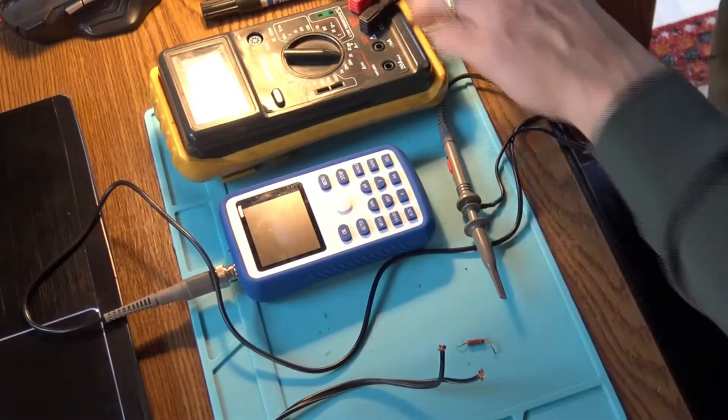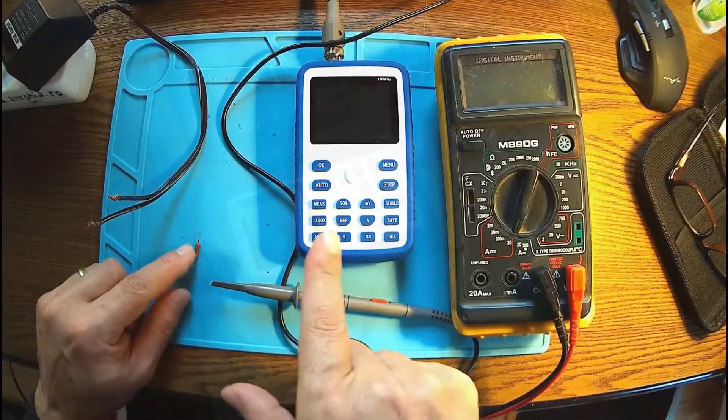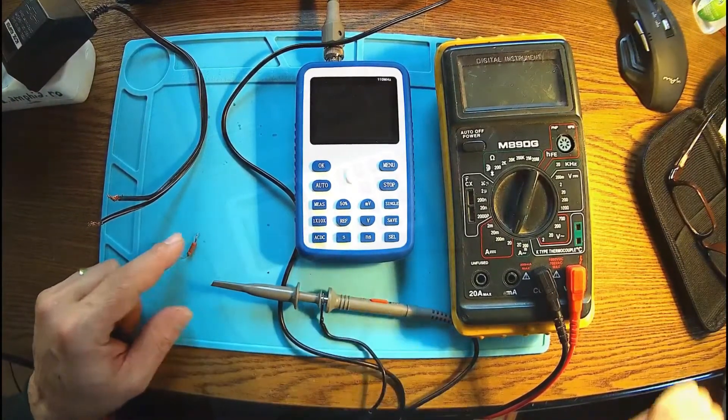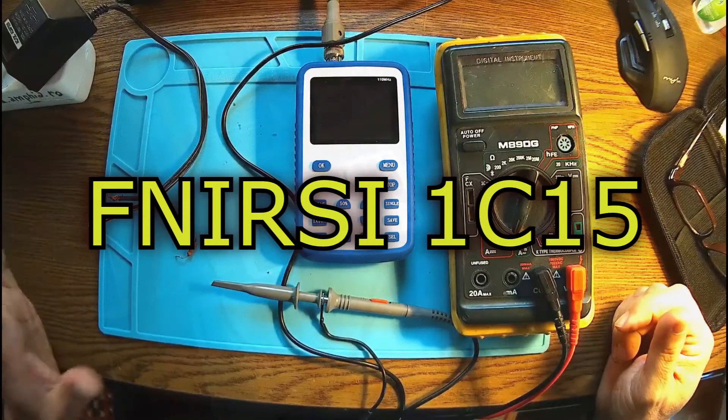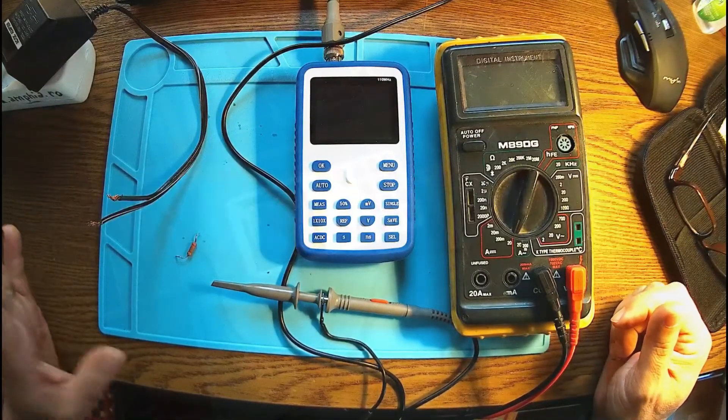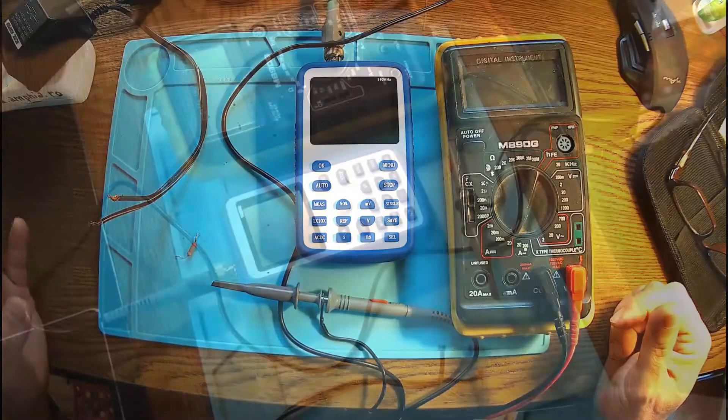A new day, a new experiment. I've been asked if this little oscilloscope, the FNIR C1 C15, can measure the ripple. Well, I never tested that before.